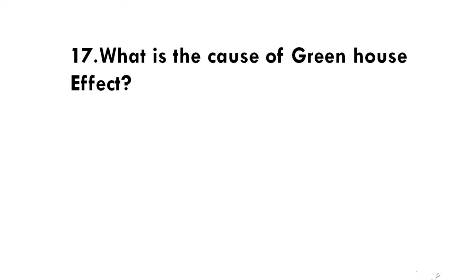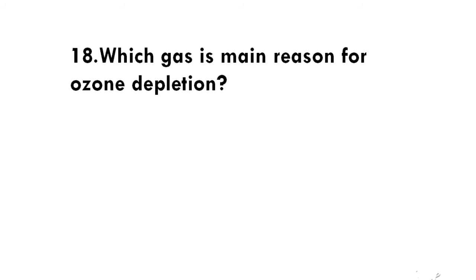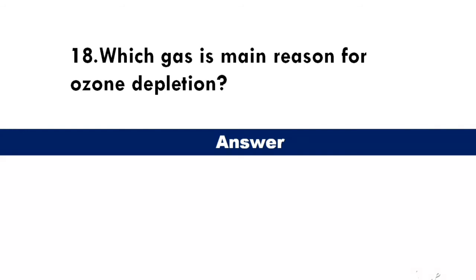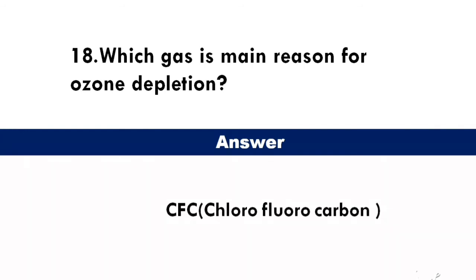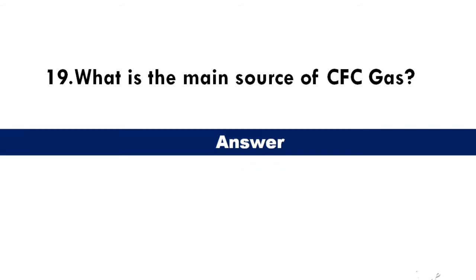What is the cause of the greenhouse effect? Answer: carbon dioxide. Which gas is the main reason for ozone depletion? Answer: CFC, chlorofluorocarbon. What is the main source of CFC gas? Answer: refrigerators.